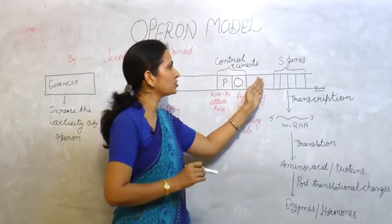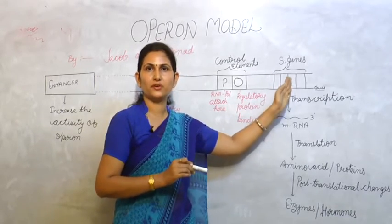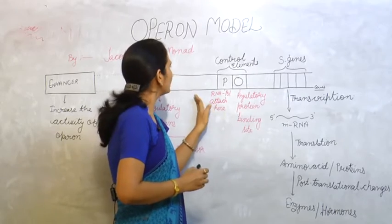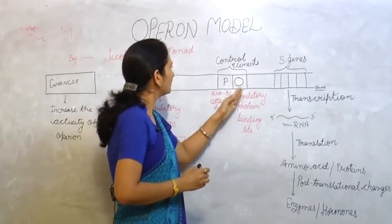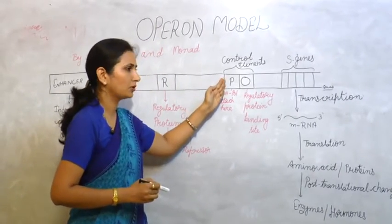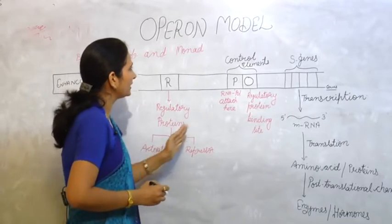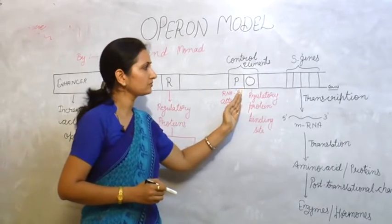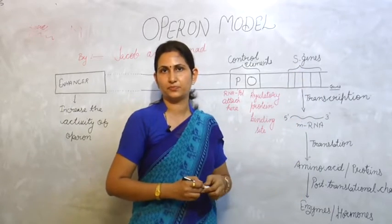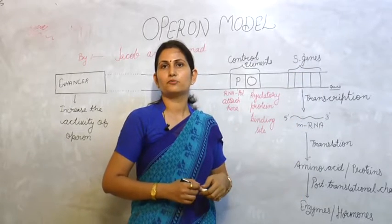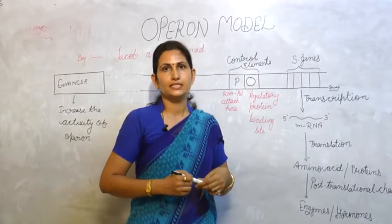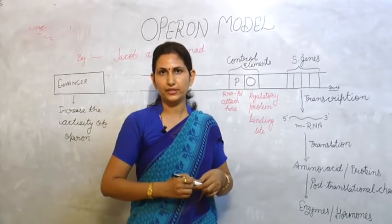As the RNA polymerase attaches on the promoter and the regulatory protein attaches on the operator, the process of central dogma starts. Central dogma was proposed by Crick.